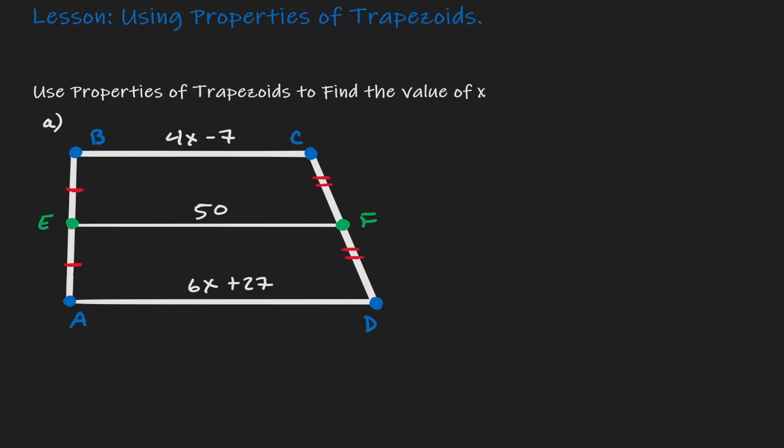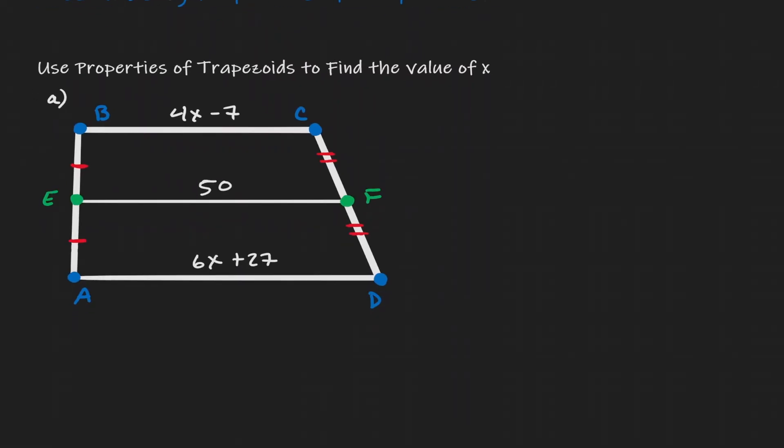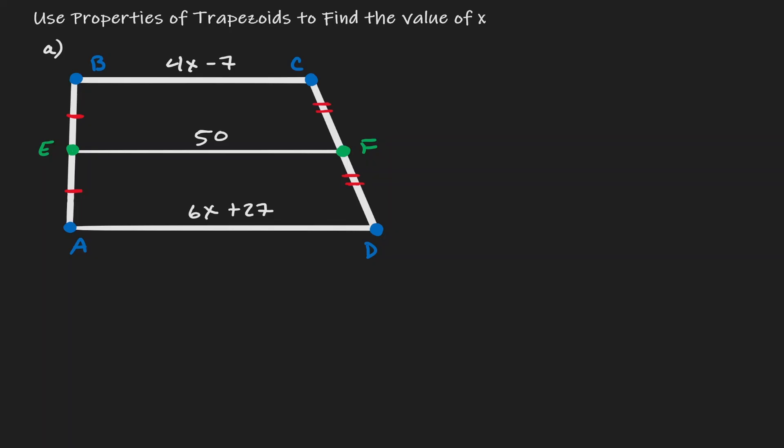Welcome. Let's use properties of trapezoids to find unknowns. Let's start by examining the figure here. The first thing that stands out is the notation. Notice that EB is congruent to EA and CF is congruent to FD. So that implies that E and F are midpoints. Therefore we can claim that EF is the median of the trapezoid.